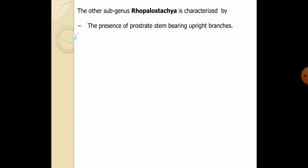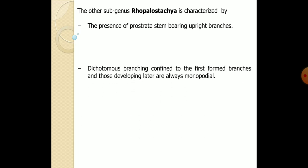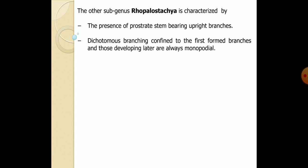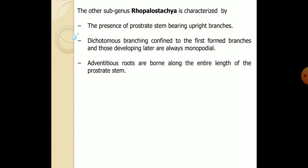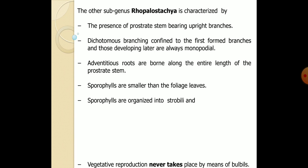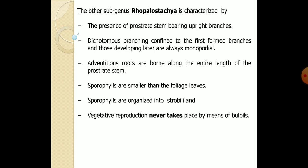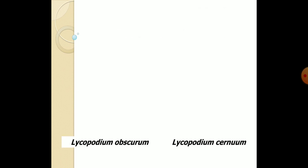The second subgenus, Rhopalostachya, is mainly characterized by a prostrate stem bearing upright branches, dichotomous branching confined to the first-formed branches and later becoming monopodial, and adventitious roots arising from the prostrate stem. The sporophylls are smaller than the foliage leaves and are organized into strobili. Vegetative reproduction by bulbils never occurs. Examples of Rhopalostachya include Lycopodium clavatum and Lycopodium annotinum.